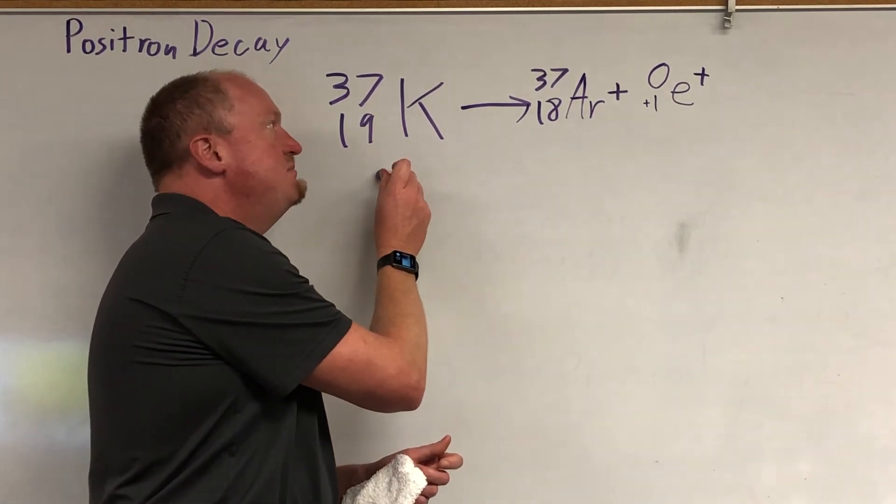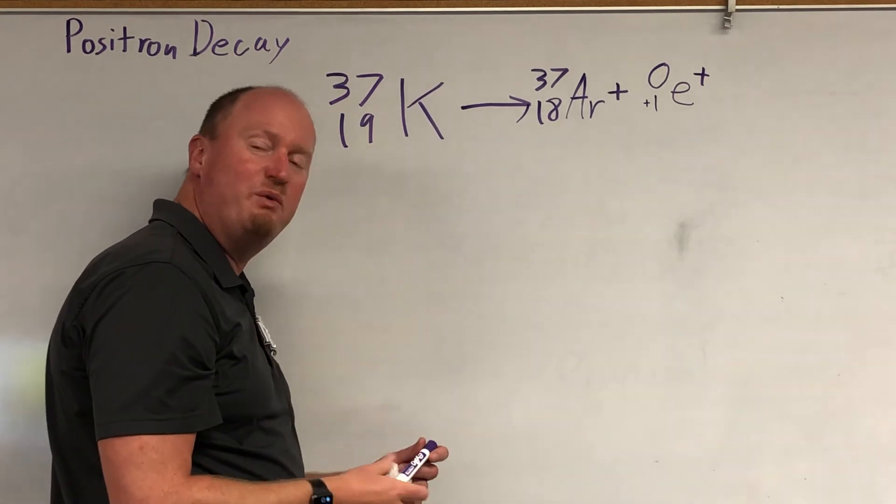Unstable potassium, that's one way we get argon.